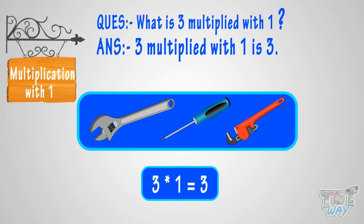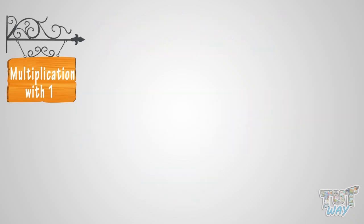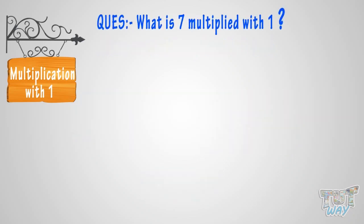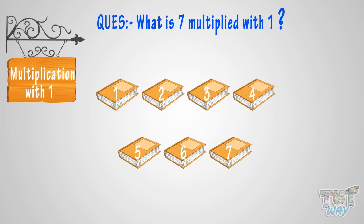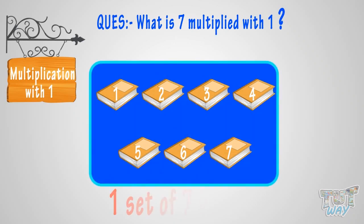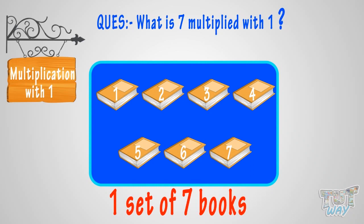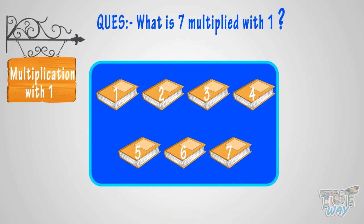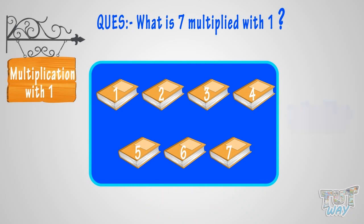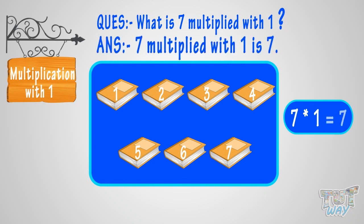Let's take one more example. What is seven multiplied with one? It is one times seven objects. See the figure? You have one set of seven books. Then how many books do you have? You have seven books. This is seven multiplied with one, or one times seven books. So, seven multiplied by one is seven.